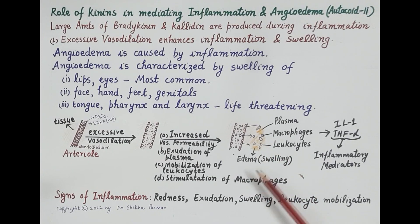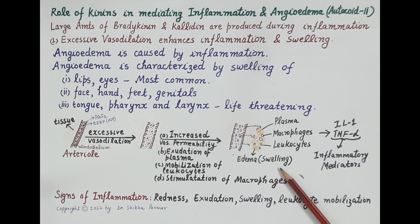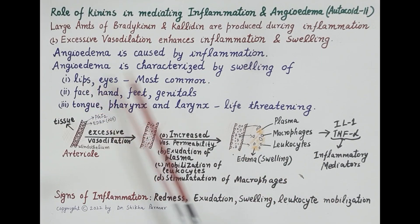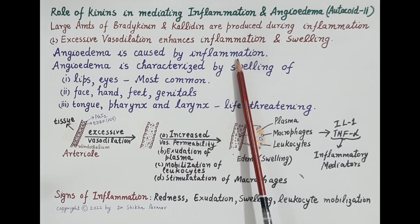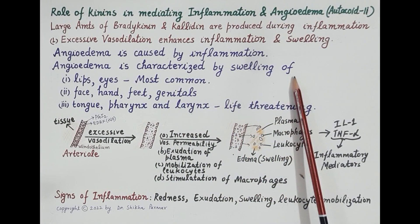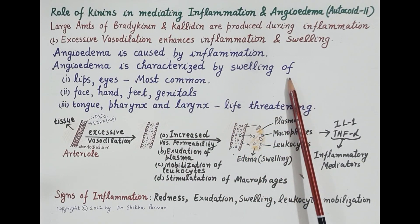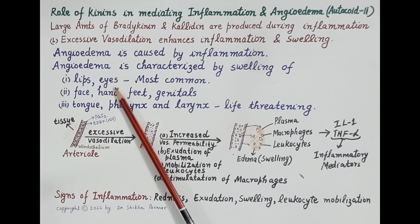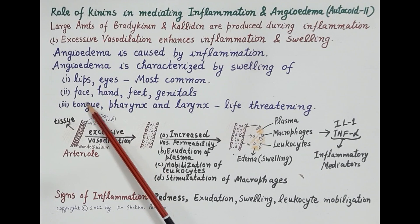If fluid accumulates in the deeper layers of the skin, it produces angioedema. Angioedema is characterized by swelling, which can occur in any part of the body, but most commonly affects the lips, eyes, face, hands, feet, and genitals.